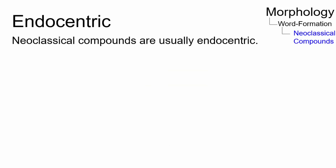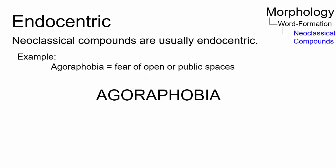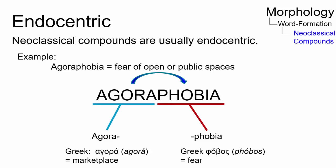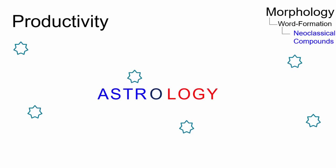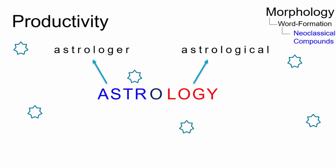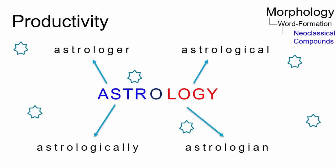Most neoclassical compounds are endocentric, like the right-headed compound agoraphobia, which is a type of phobia. Once a classical compound has been created, it typically becomes the foundation of a whole series of related words, for example astrology, astrological, astrologer.